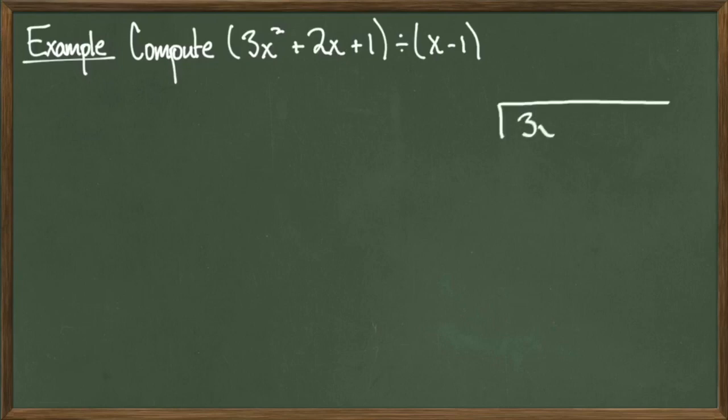Our first example will be to compute the polynomial 3x squared plus 2x plus 1 divided by the polynomial x minus 1. As always, the first step is to write the polynomial we are dividing into on the inside of the division bar and the polynomial we are dividing by, aka the divisor, on the outside.